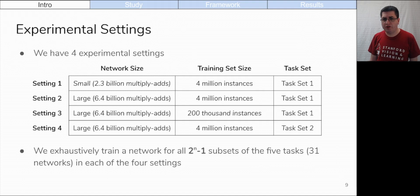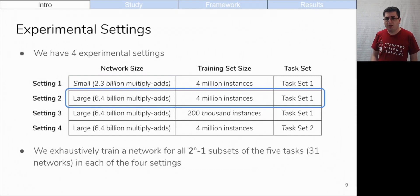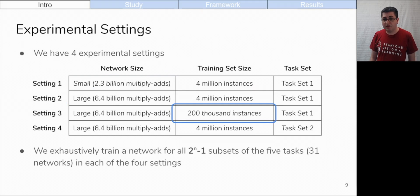We run experiments under four different settings. We test the effect of network size on multi-task learning with setting 1. It uses a smaller and less deep network than the other settings. Setting 2 is the control. It has a large network, the full data set, and task set 1. We test the effect of data set size on multi-task learning with setting 3. Here, we limit ourselves to only 200,000 instances. Finally, we test more task relationships with setting 4, which uses task set 2. We exhaustively train a network for all 2 to the n-1 subsets of the five tasks in each of the four settings.